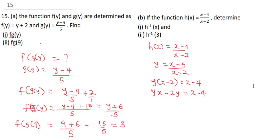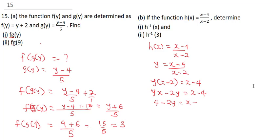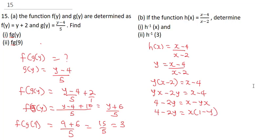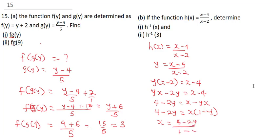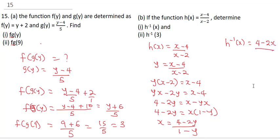From here we need to make x the subject of the formula. Moving 4 across gives 4 minus 2y equal to x minus yx. So we have 4 minus 2y equals x times (1 minus y). Dividing both sides by 1 minus y gives x equals 4 minus 2y all over 1 minus y. Having solved this, we replace x with h inverse of x and replace y with x, giving h inverse of x equals 4 minus 2x over 1 minus x.